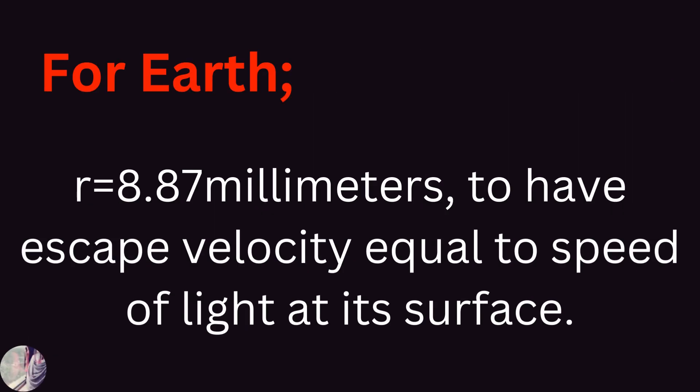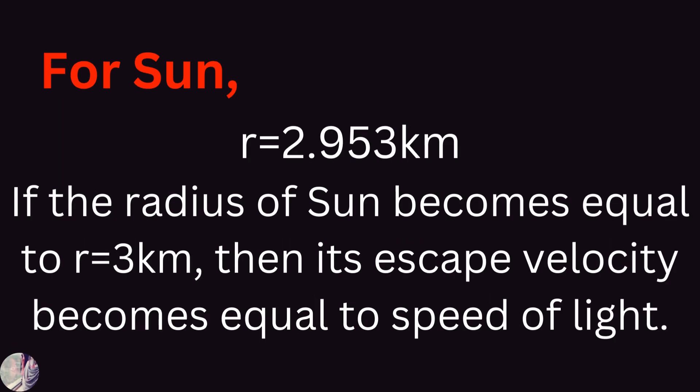For example, for Earth, this radius should be equal to 8.87 mm to have escape velocity equal to the speed of light at its surface. For the Sun, this radius is equal to 2.953 km.